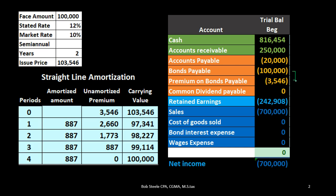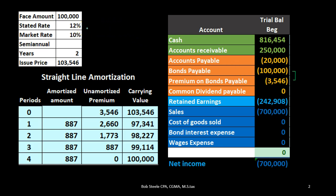Now the issue is that we make payments on this bond but we don't pay back the principal in installments — the $100,000 doesn't go away the way it would on an installment loan. We're going to pay interest at the stated rate of 12%, but then we have the question of what to do with this $3,546 premium. It has to go away by the end of the bond's life.